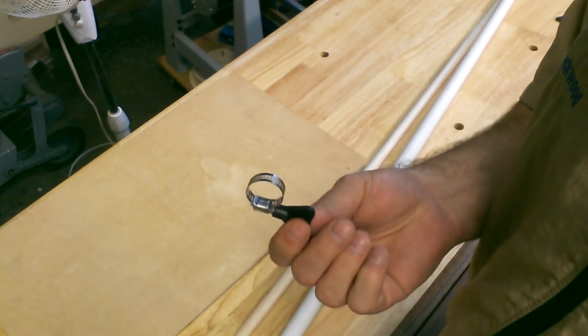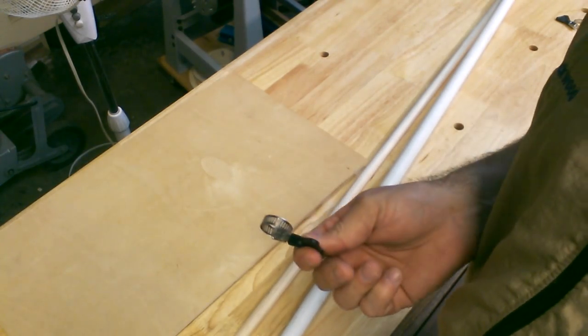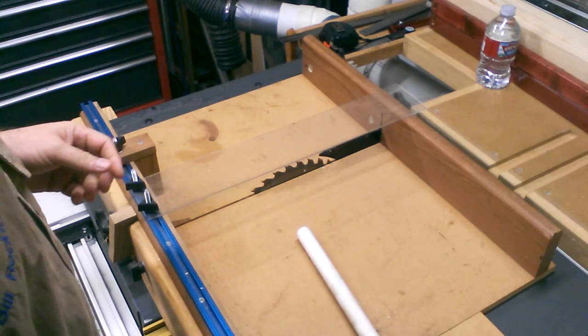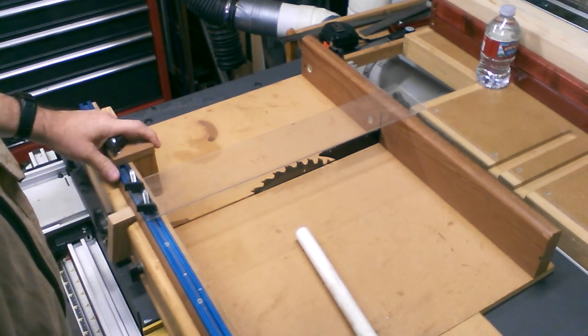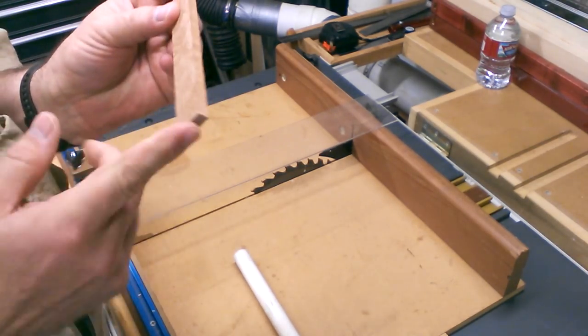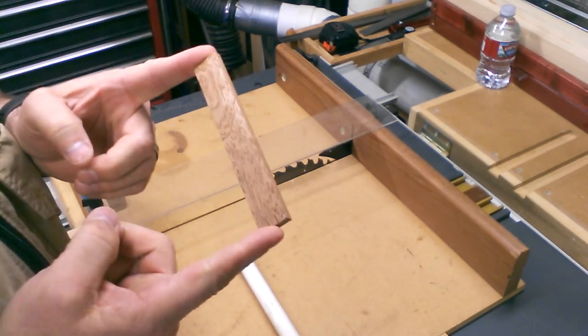So again, all shop scraps. The first thing I'm going to do is I'm going to use my table saw to cut this PVC to the exact same length as my cheater stick.